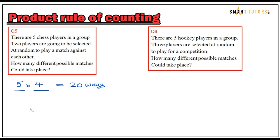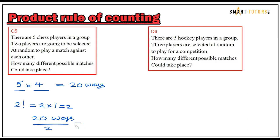As we learned earlier, since two players are selected from the same group there are duplicates. Two factorial means two times one, which is two. So divide the 20 ways by two. The correct answer — how many different possible matches — is ten ways.